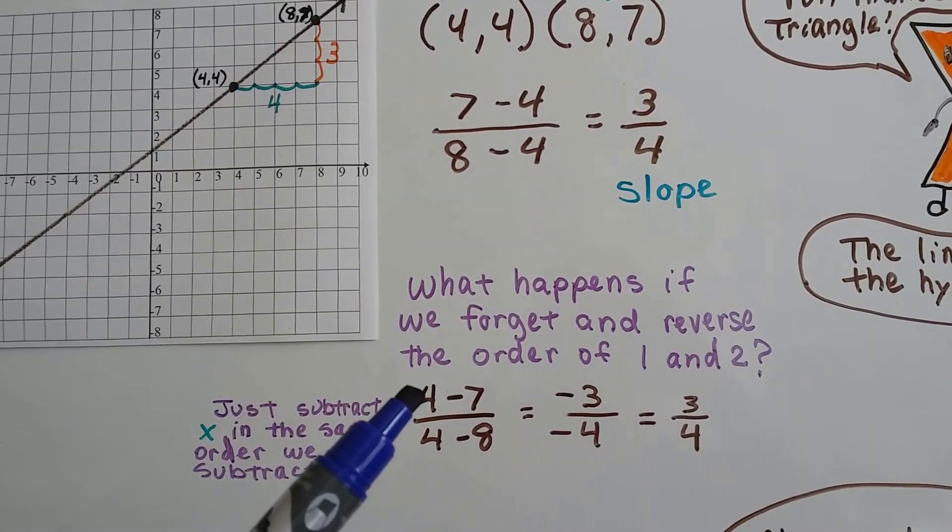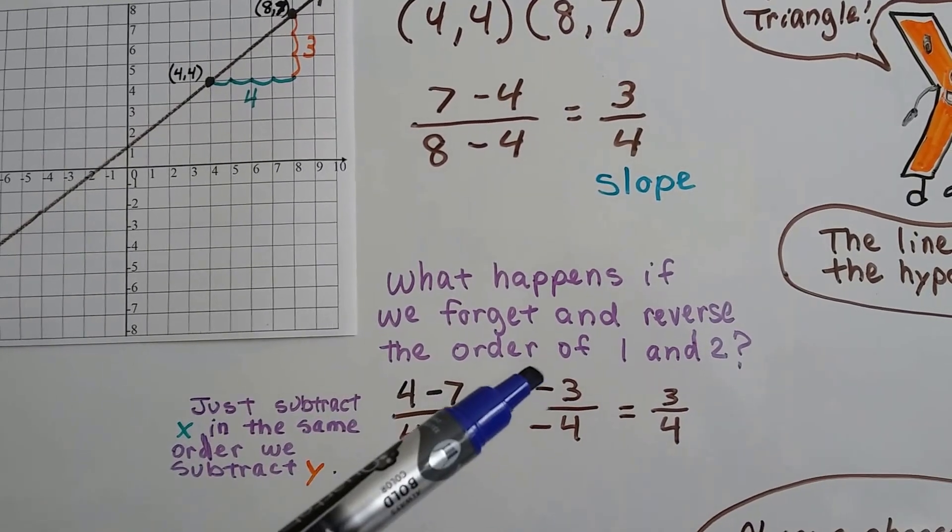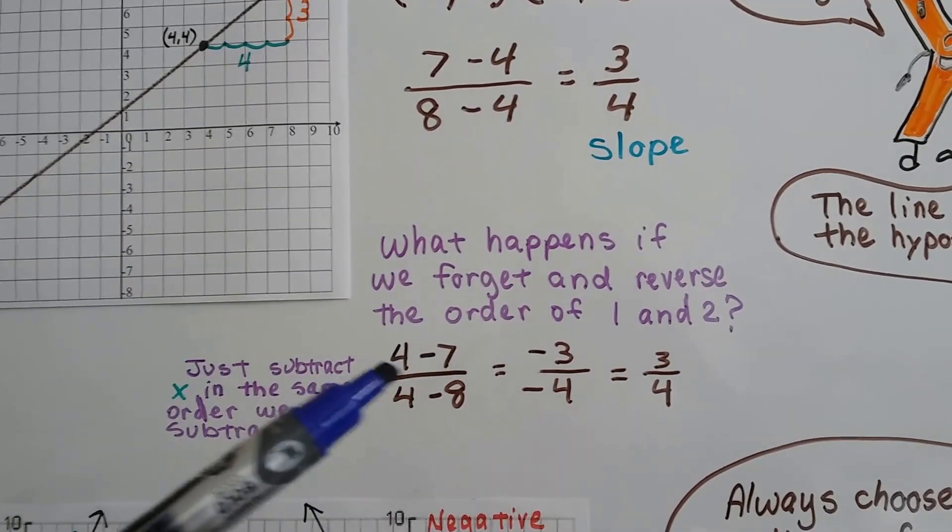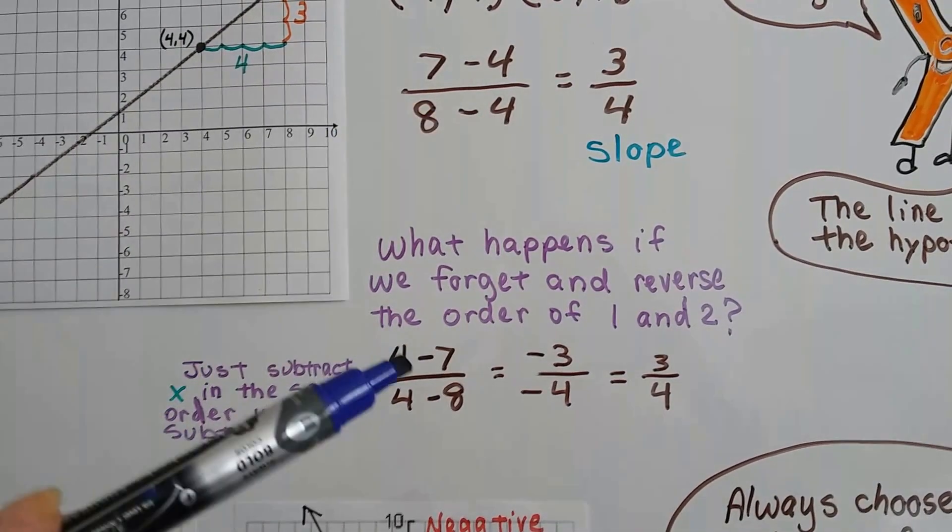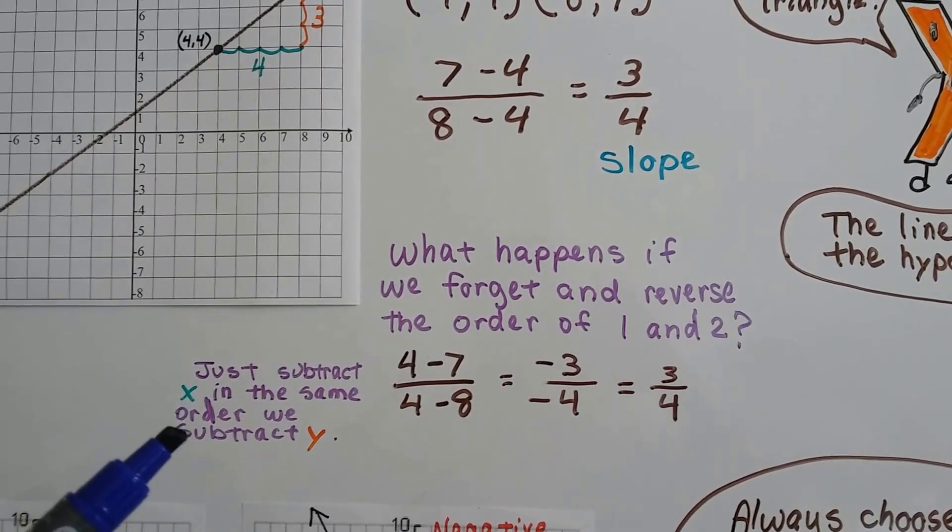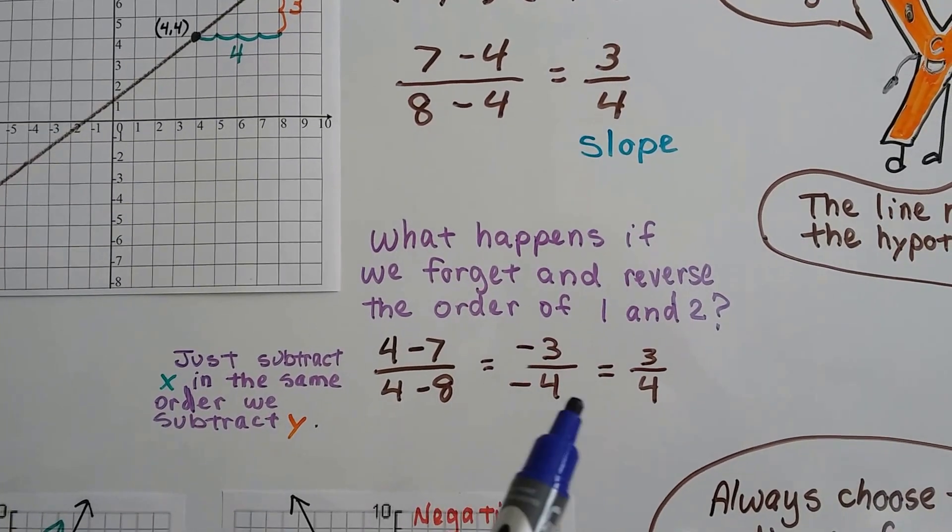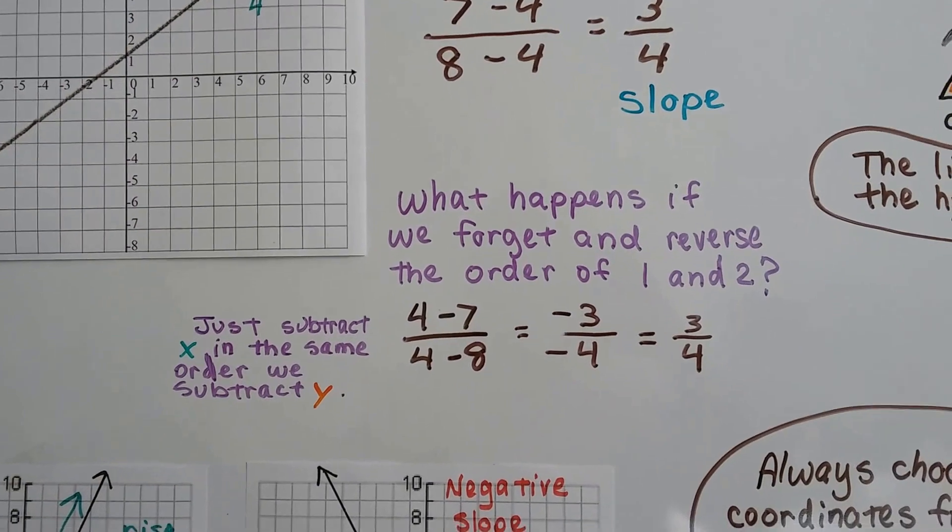You just subtract x in the same order that you subtract y. So if we did it backwards and did 4 minus 7, instead of 7 minus 4, we'd get a negative 3 instead of a positive 3. So if we did that backwards, we'd have to do the x backwards as 8. Instead of 8 minus 4, we'd have 4 minus 8. So whatever is done for the y, you have to do for the x, and then it'll still work out. You'll end up with a negative 3 over a negative 4, which comes out to be a positive 3 fourths.